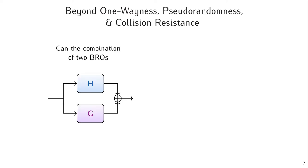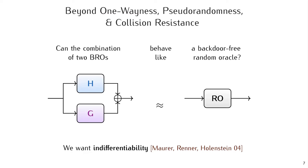Can the combination of two bros, for instance with the XOR combiner, actually behave like a backdoor-free random oracle? What we strive after here is the notion of indifferentiability, which could actually imply other single-stage games such as one-wayness, PRG, and collision resistance.